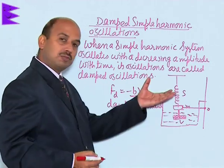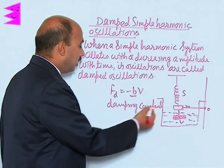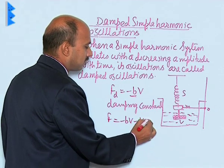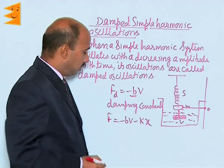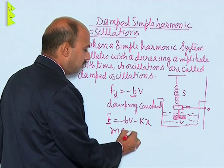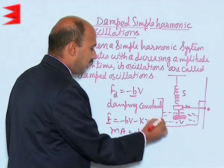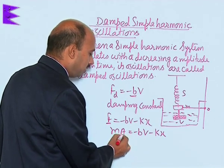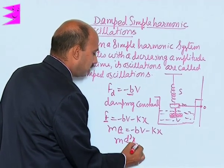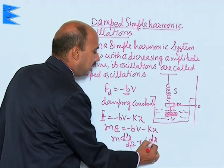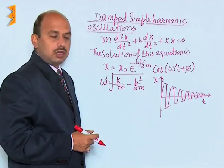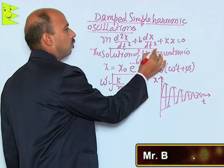When the body is displaced by a small displacement x downward, the total force is F equals minus bv minus kx. We can write M times acceleration A equals minus bv minus kx, which gives the equation: M times d²x/dt² plus b times dx/dt plus kx equals 0. This is the equation for damped oscillation.